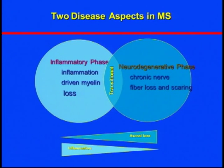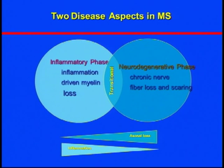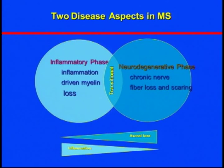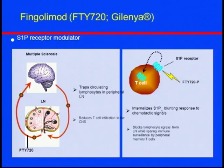The two phases go side by side. Even in relapsing-remitting MS, which is predominantly inflammatory-driven myelin loss, there is still an underlying neurodegenerative component. By treating folks with MS earlier, one can prevent neurodegeneration. What is needed now is a therapy that specifically targets neuronal fiber loss and scarring — targeting the neurodegenerative phase.